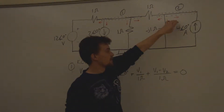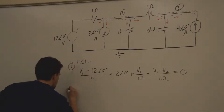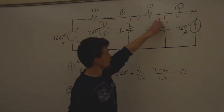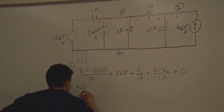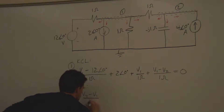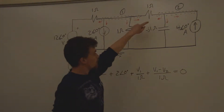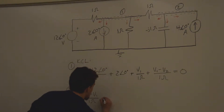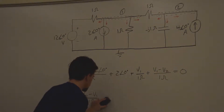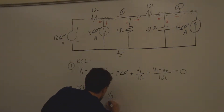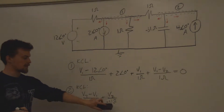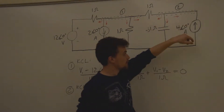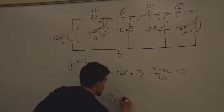Let's get our second equation by doing KCL at this node. We'll sum all the currents leaving this node: V2 minus V1 over 1 ohm, then V2 over the impedance of the capacitor which is negative j1 ohms. Our last current is defined by the source — since it flows into the node, we call that minus 4∠0°. All of those equal zero.